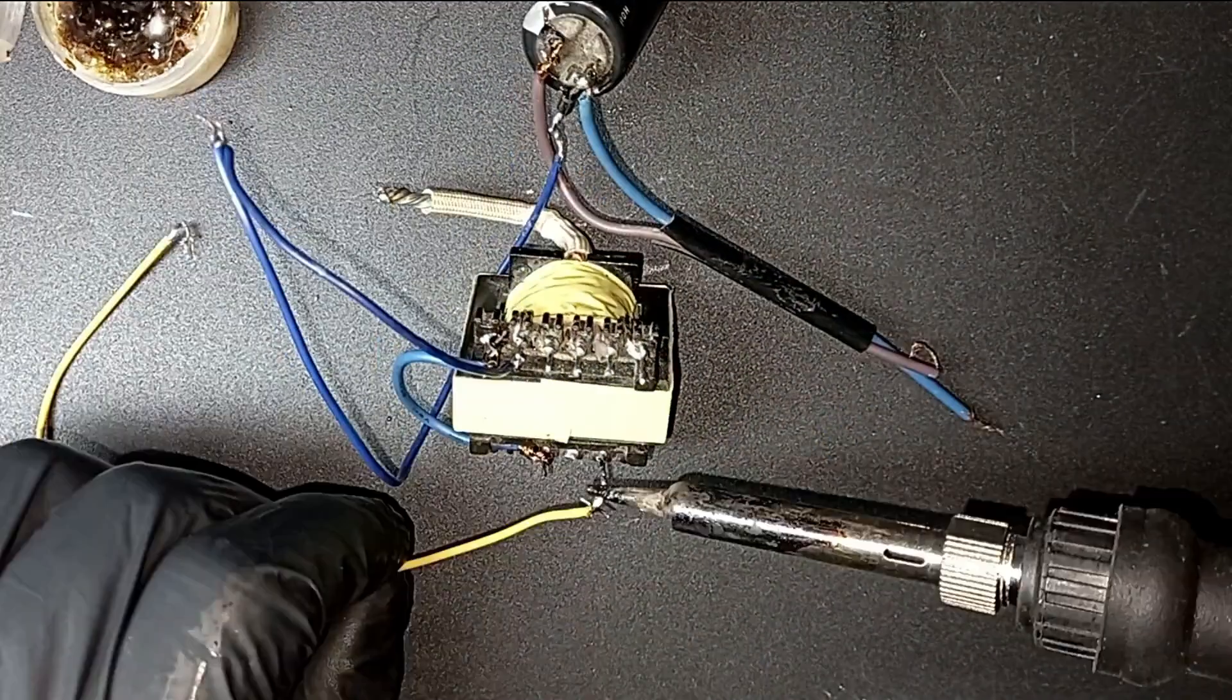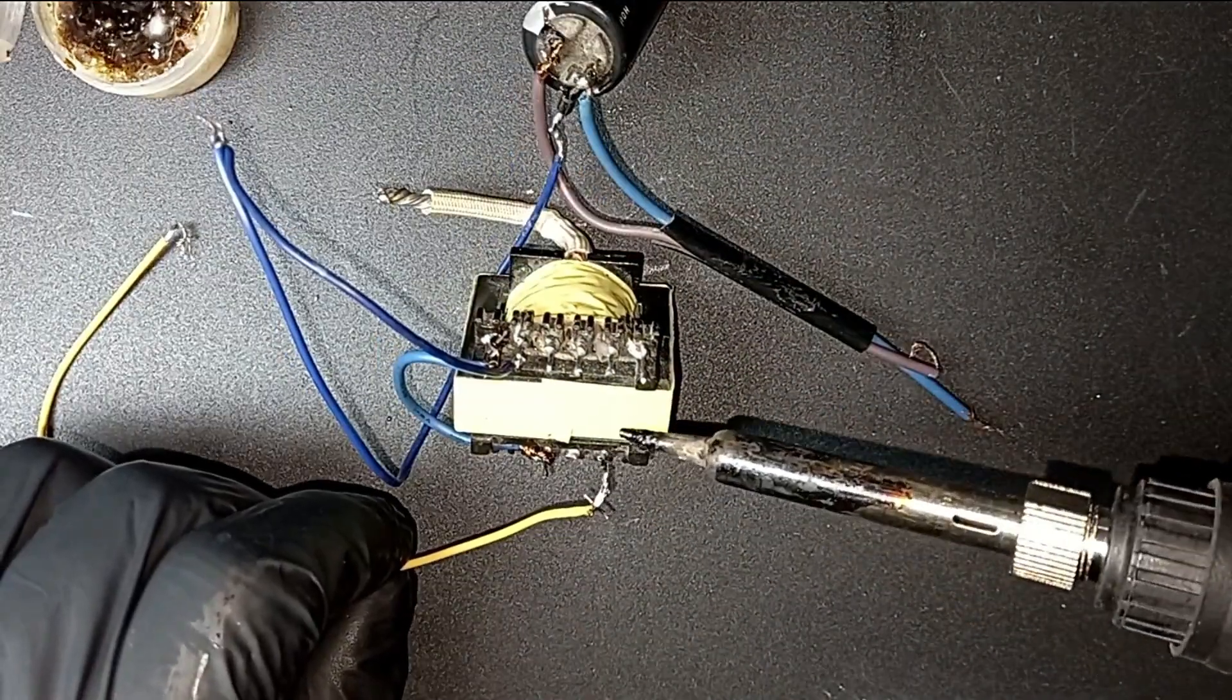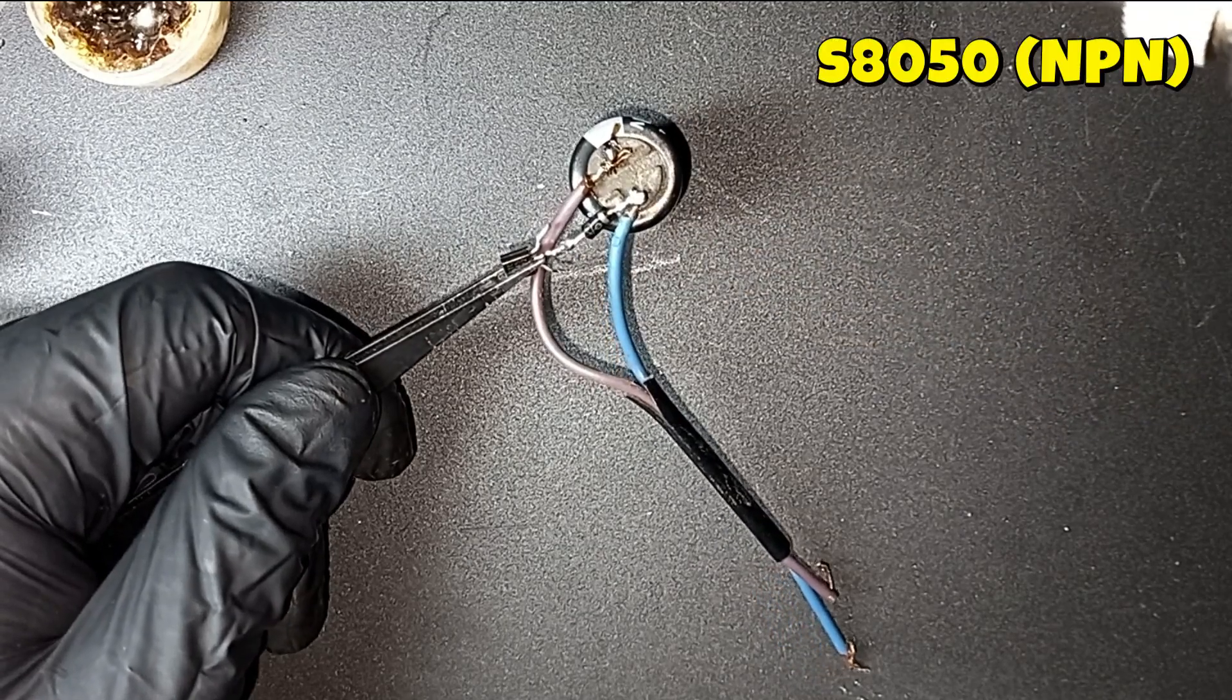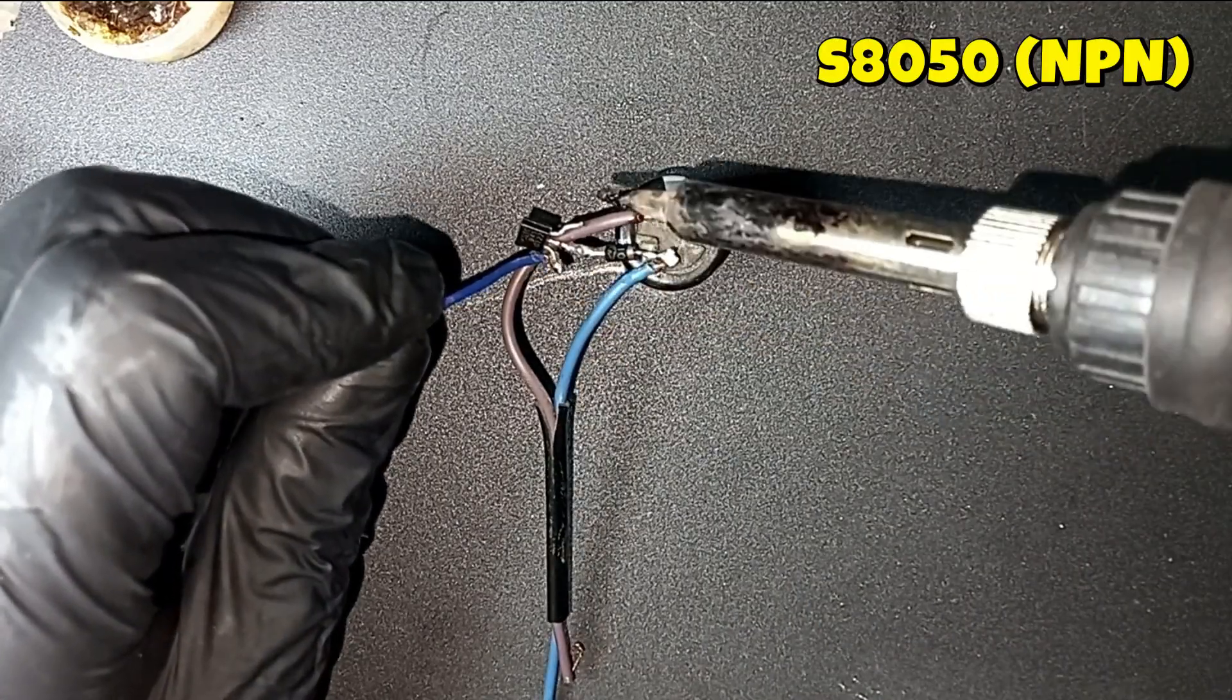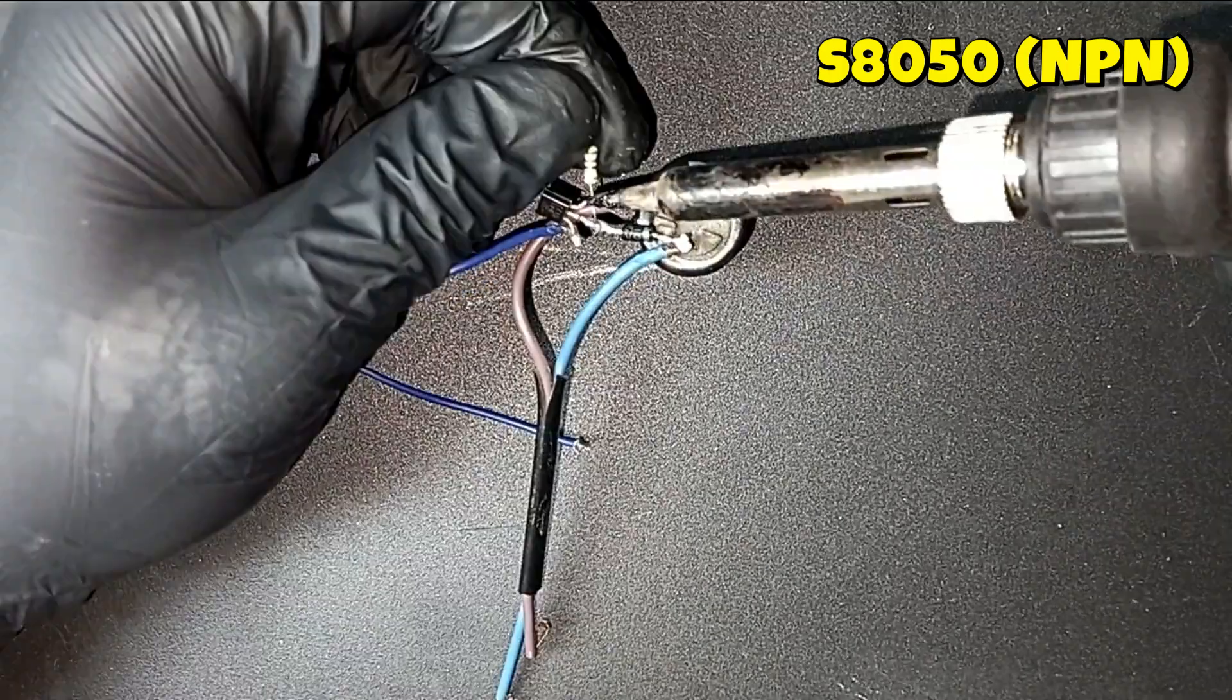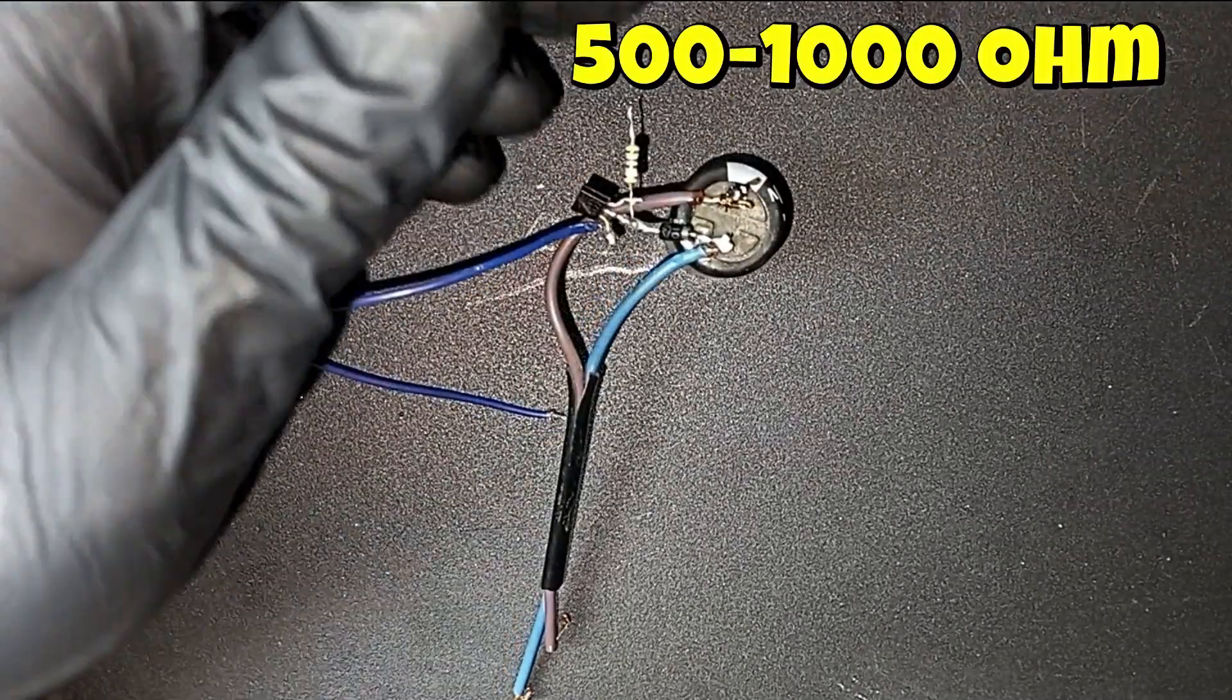We connect the collector to the anode of the diode and the base to a resistor with a rating of 500 to 1000 ohms. Next, we connect the output of the primary winding to the resistor on the base.